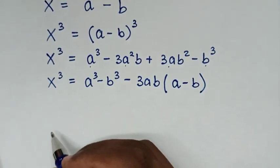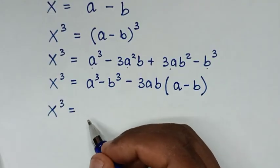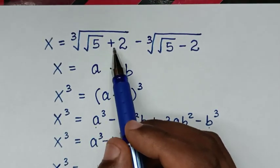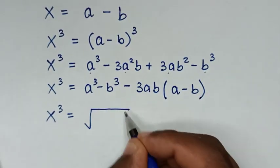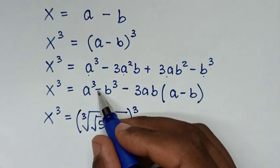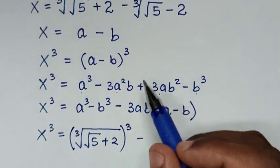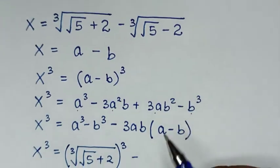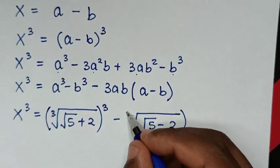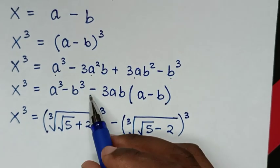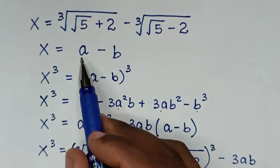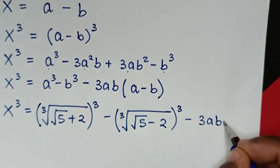In the next step, x cubed equals a cubed minus b cubed minus 3ab(a minus b). We substitute the values: a cubed is the cube root of (square root of 5 plus 2) raised to the power of 3, and b cubed is the cube root of (square root of 5 minus 2) raised to the power of 3. Since a minus b equals x, the last term becomes minus 3ab times x.